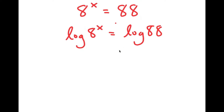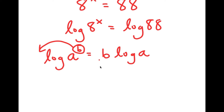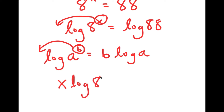Now, if I have something in the form log of a to the power of b, I can move this exponent b to the front, so it's going to equal b times log a. In this case, I have log 8 to the power of x, and I can move x to the front, so I get x times log 8 is equal to log 88.